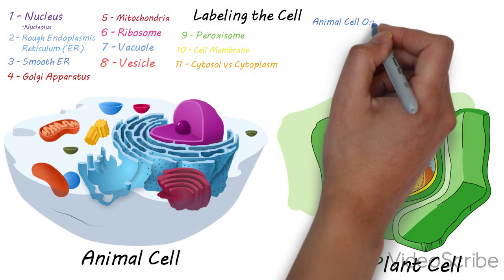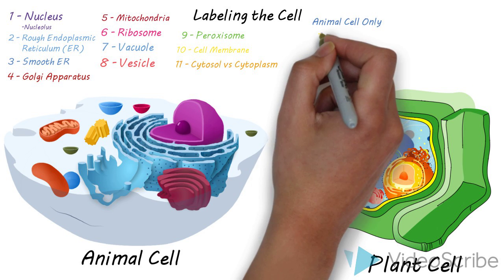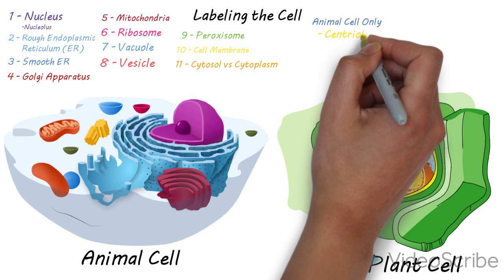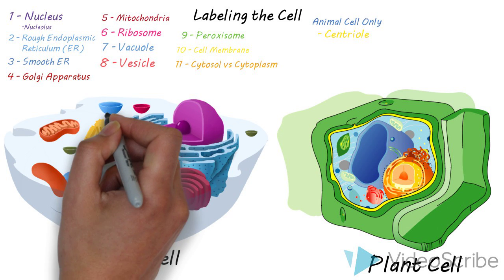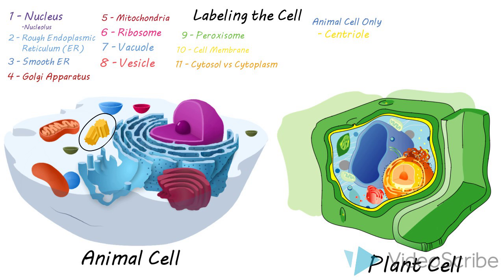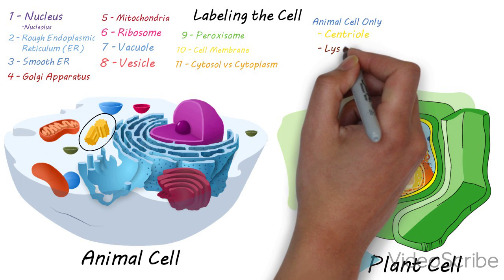In the animal cell only we have a few specific structures. One of those being the centrioles. They're these star-shaped structures, usually somewhat centrally located.